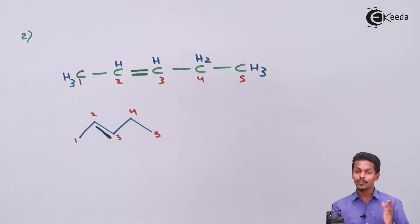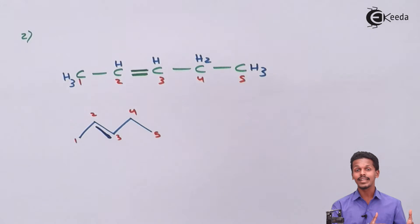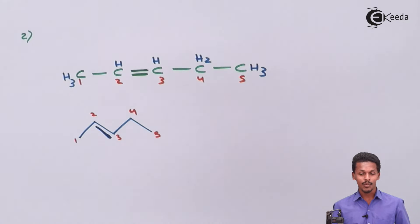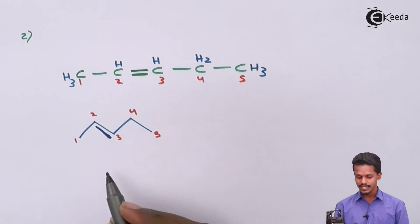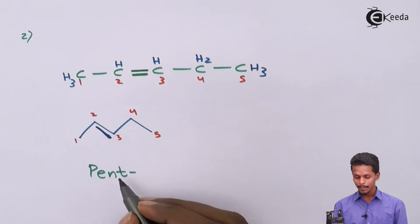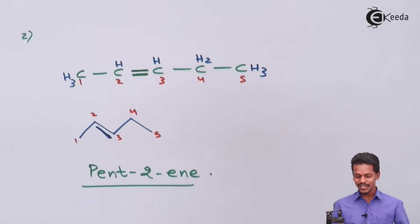The IUPAC nomenclature for this second isomer is straightforward. Five carbon atoms in the longest chain gives 'pent-', and since this is an alkene, the base name is 'pentene.' The double bond is at carbon number two, so the IUPAC name is pent-2-ene.